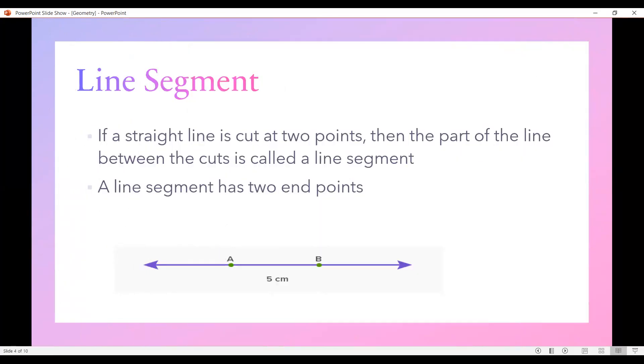If a straight line is cut at two points, the part of the line between the cuts is called a line segment. A line segment has two end points. This is a line. This was a straight line. It has been cut at two points, one at this point and the other one at this point where it is written AB. So it's a part in the middle and we are going to read this line as line AB.